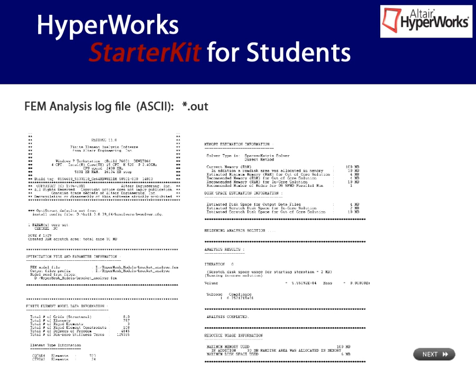Also of interest is the FEM log file, the so-called outfile. The outfile provides a summary of relevant model information, such as the number of elements, nodes, or the type of elements being used. In addition, the outfile contains information about memory for out-of-core or in-core solutions. Model warnings and errors are also listed here. You find these and other files in your working directory — in other words, all the files are saved in the directory of the .fem analysis file.